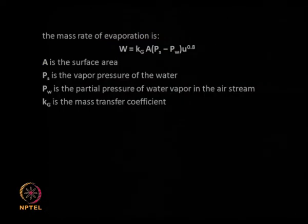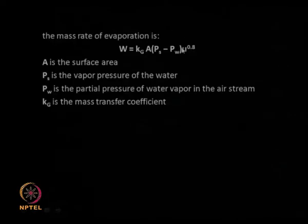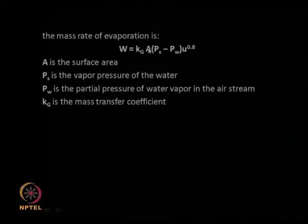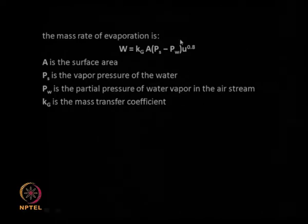The mass rate of evaporation is given by: k_g × A × (p_s − p_w) × u^0.8, where k_g is the mass transfer coefficient, A is the area, p_s is the vapor pressure of water, p_w is the partial pressure of water vapor in the air, and u is the velocity. So (p_s − p_w) is the driving force for water to evaporate from the solid into the air stream. The velocity u contributes because turbulence increases the mass transfer coefficient — i.e., the transfer of water vapor from the solid surface to the bulk of the air.